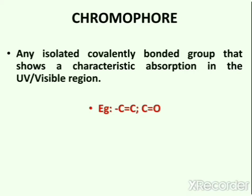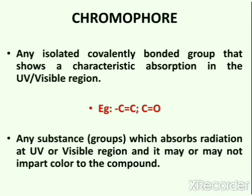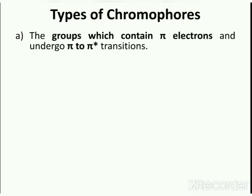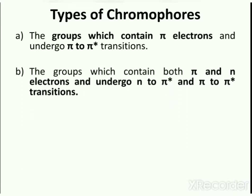Now few examples of chromophore include C double bond C and C double bond O containing groups. There are two types of chromophores. First, the groups which contain pi electrons and undergo pi to pi anti-bonding transitions. Second, the groups which contain both pi and N electrons and undergo N to pi anti-bonding and pi to pi anti-bonding transitions.